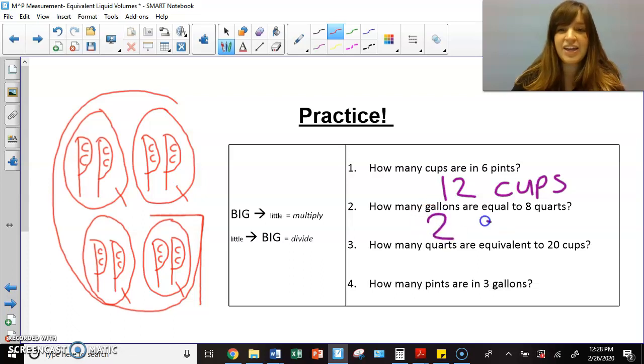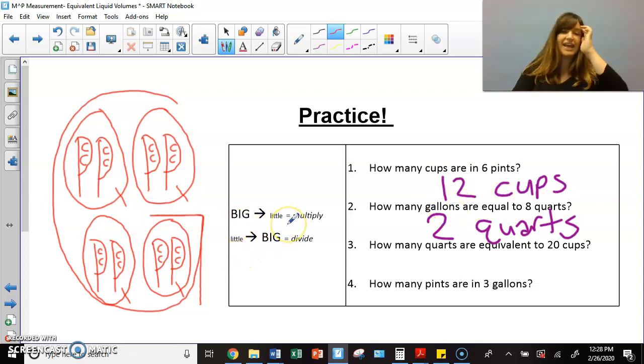which would equal two gallons. I can also do that by saying, okay, there's eight quarts. I know that there's four quarts in a gallon. So I'm going from small to big for my unit or little to big. So I'm going to divide, which means I'm going to take eight quarts and I'm going to divide it by